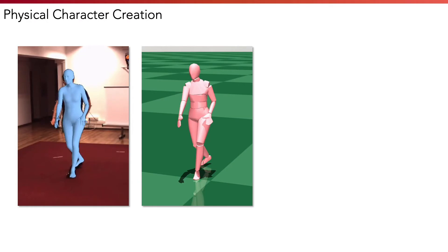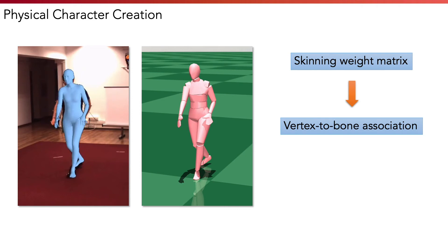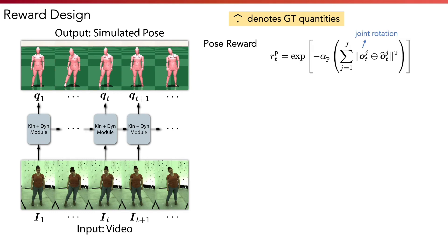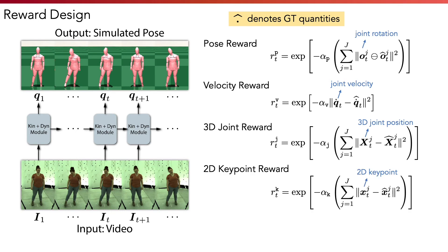Our character agent is created from human mesh models such as SMPL. We use the skinning weight matrix to obtain the vertices belonging to each bone, and then compute the 3D convex hull of the bone vertices to obtain each bone's geometry. We design different rewards to match policy-generated motion with the ground truth. Specifically, we use rewards that match joint rotation, joint velocity, 3D joint positions, and 2D keypoints. We combine the rewards using multiplication.